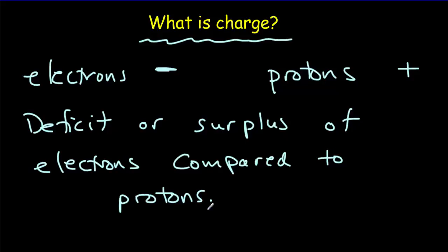So if we have two protons and two electrons, positive and negative cancel each other out, and we have no charge. But if we've got three protons and two electrons, we're going to have a small positive charge.